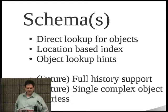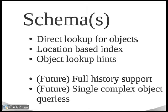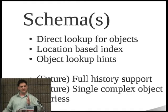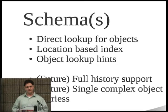The internal schema supports direct lookup for objects. We use a location-based index. And currently we support object lookup hints, which means we can do things like reverse lookups. So if we look up a way, we can see all the nodes that belong to it, but we can also do the reverse — if we look at a node, we can see all the ways and relations that it belongs to. We'll support full history in the future, and we're looking at possibly doing single complex object queries, where requesting a way returns all its component nodes in one single request.